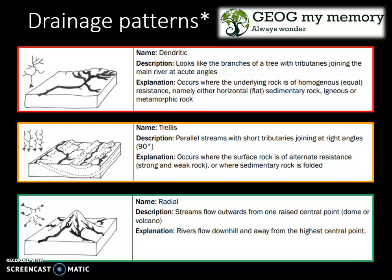Lastly, you have the radial drainage pattern. Here, streams flow outwards from one raised central point, which can be a dome or volcano. Rivers flow downhill and away from the highest central point.